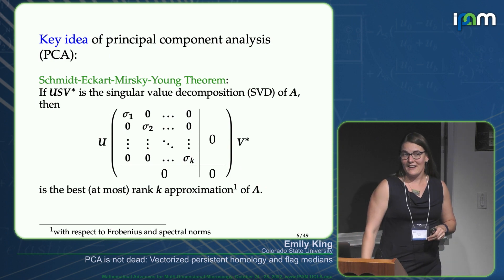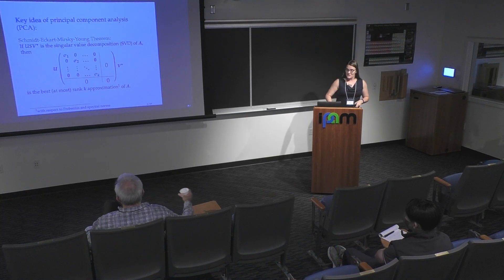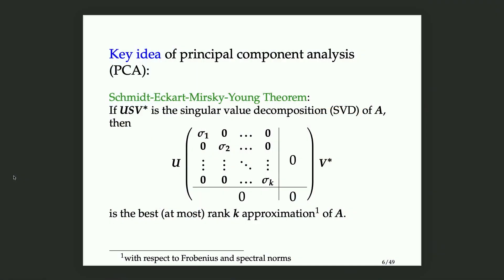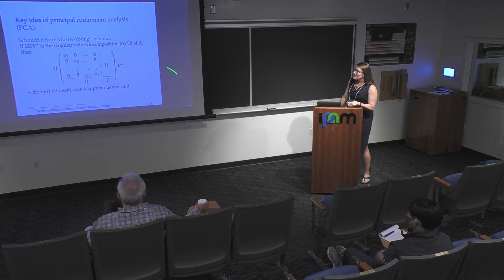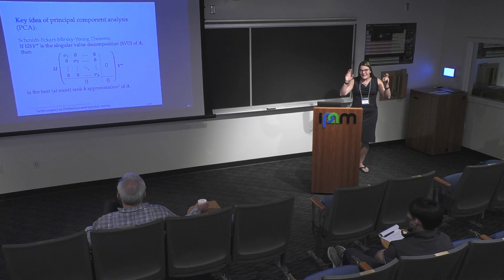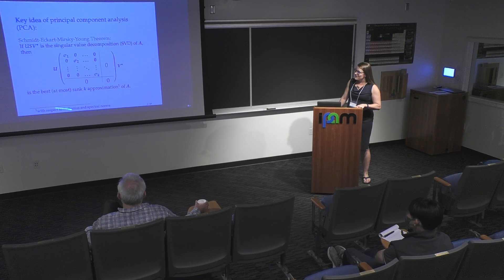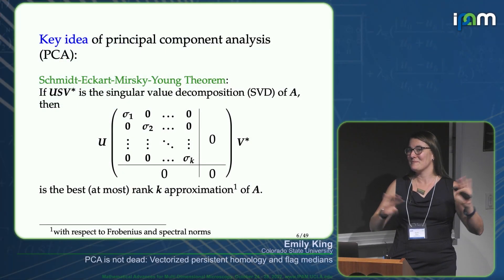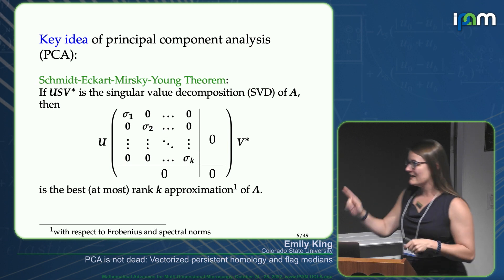The key idea of principal component analysis is the Schmitt-Eckert-Mirsky-Young theorem, which says that if we have a singular value decomposition of a matrix, then the truncated decomposition is the best at-most rank-k approximation of A. If we have some way of stacking our data into a matrix, we can use this truncation to find the best-fit k-dimensional subspace. Remarkably, this optimizes two different cost functions simultaneously.